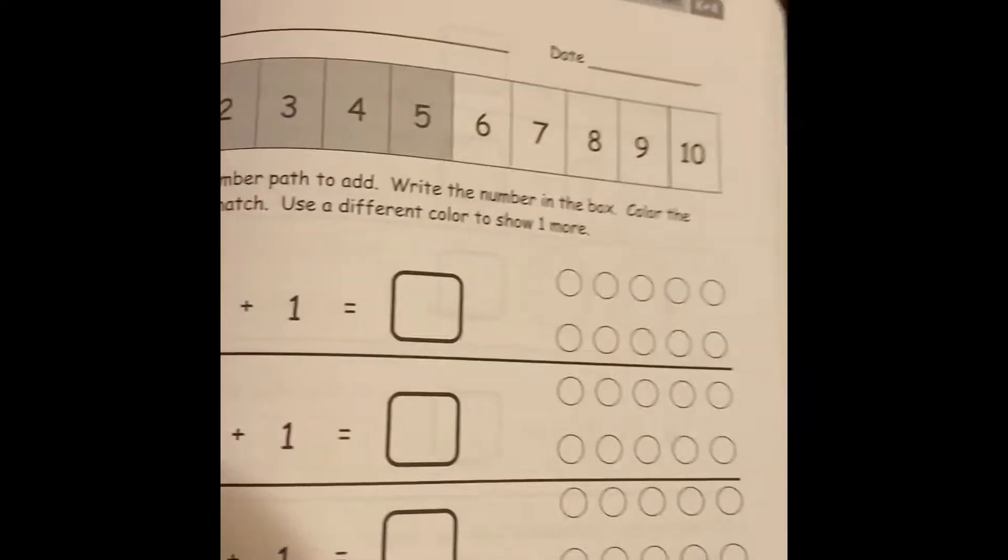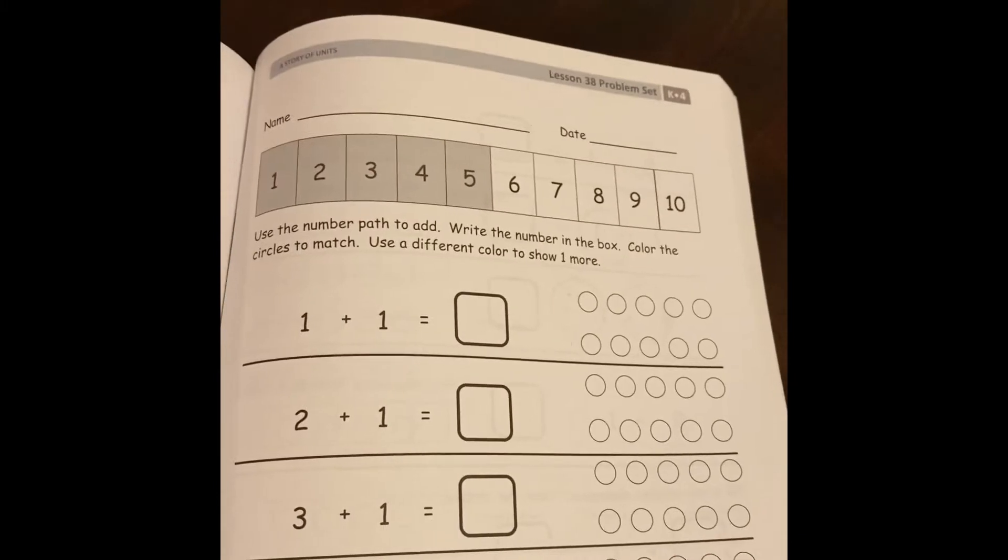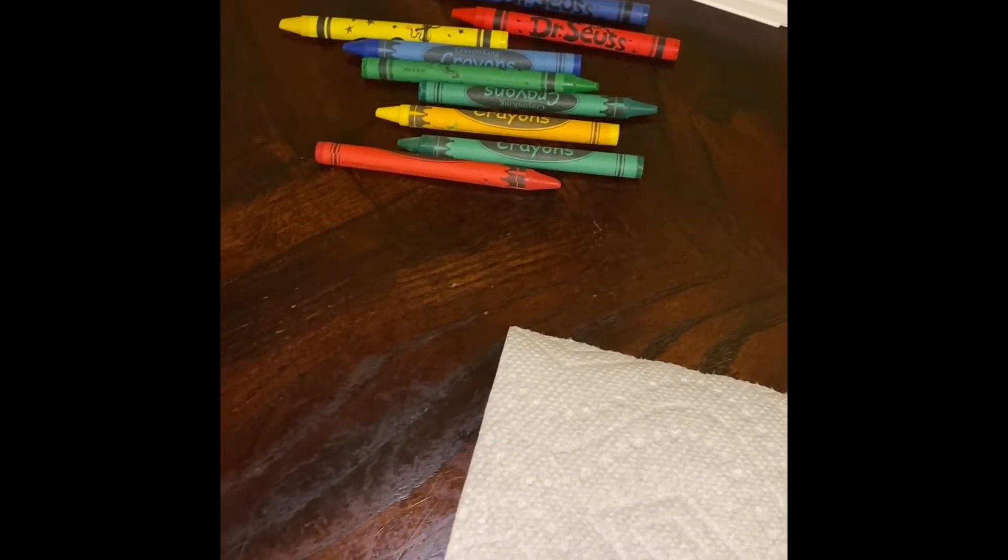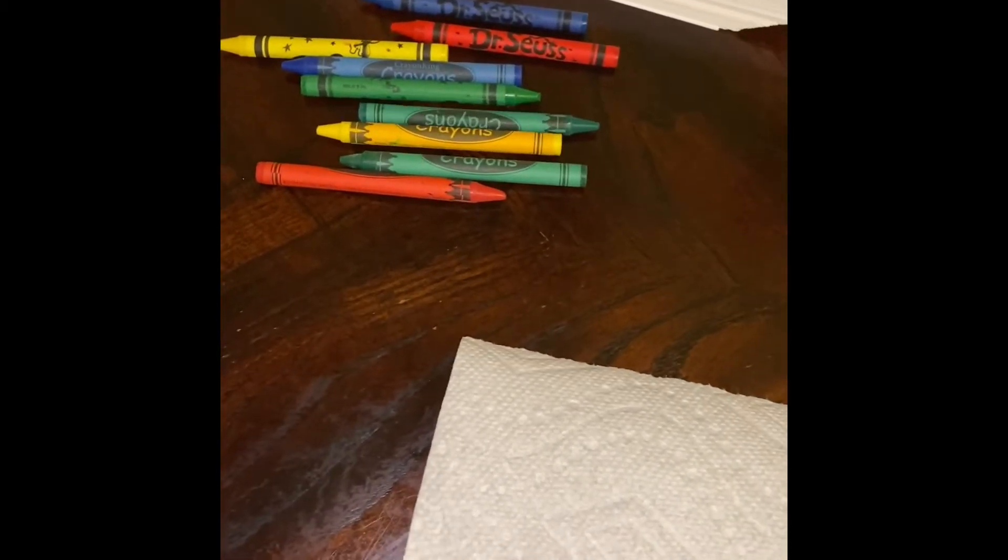So before we get started, let's do a quick fluency practice. You just need a flat surface, and I'm going to use this paper towel because I'm using crayons as my counters, and I don't want it rolling over the table while I'm doing it, but you guys can use toy cards, you guys can use dry beans, basically whatever you have that you can use as counters.